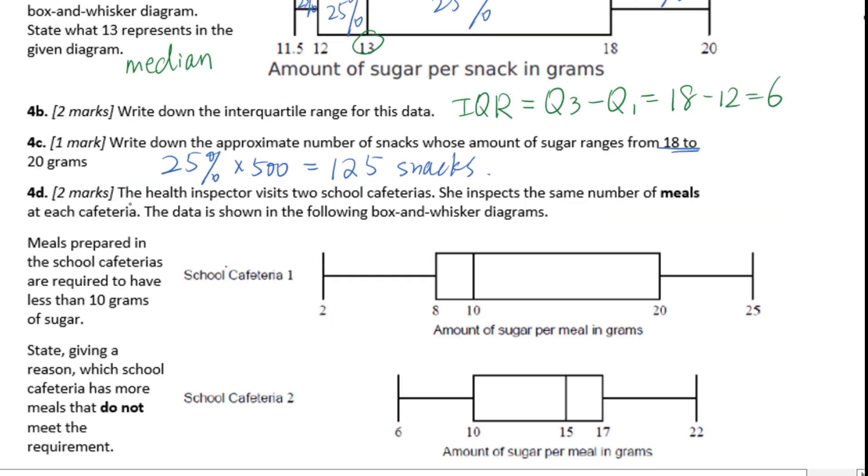Let's go to 4D. The health inspector visits two school cafeterias. She inspects the same number of meals at each cafeteria. The data is shown in the following box and whisker diagrams. Meals prepared in the school cafeterias are required to have less than 10 grams of sugar.